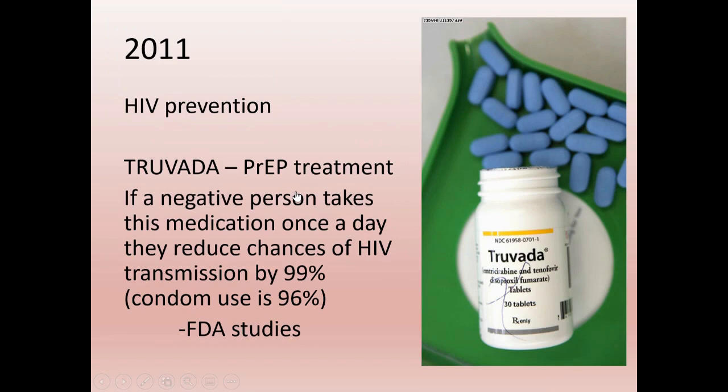In 2011, HIV prevention gets a new breakthrough called PrEP therapy. The medication, called Truvada, means that if an HIV-negative person takes it once a day, they reduce the chance of HIV transmission by 96% to 99%. Condom use is 96% effective, which is still highly effective — condoms aren't higher because they break or slide off. 99% transmission prevention is the highest rating you can get besides abstinence-only.